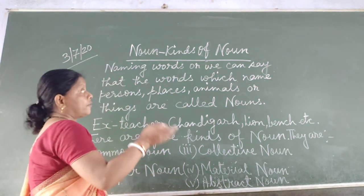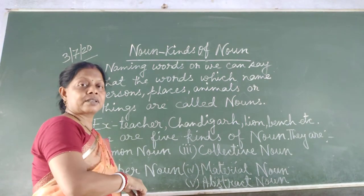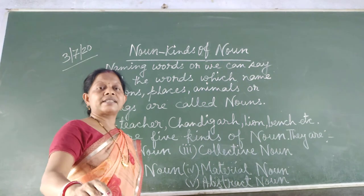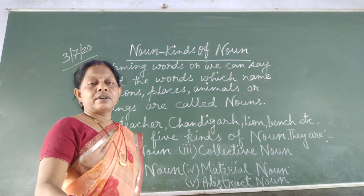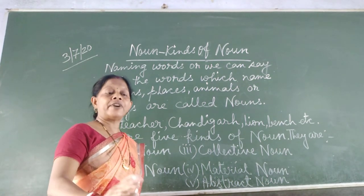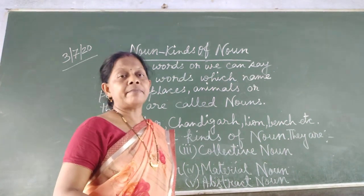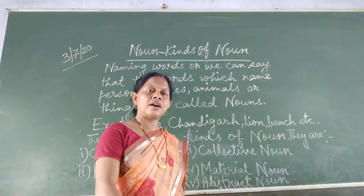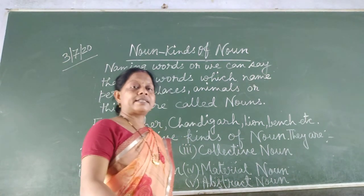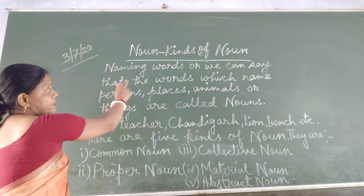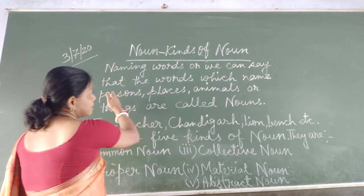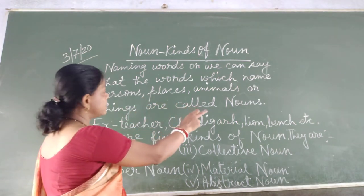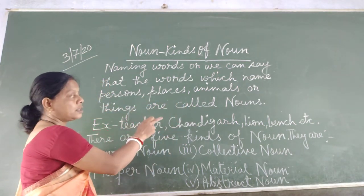Noun is the first part of speech, and you have studied about noun in your junior classes also. As we all know, everything in this world has got a name, and all the naming words are known as nouns. Naming words, or the words which name persons, places, animals or things, are called nouns.